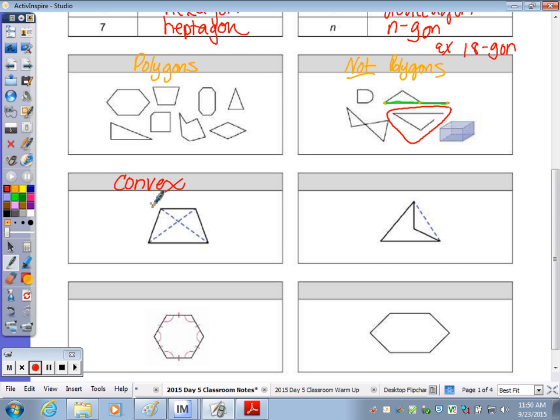Convex meaning every single diagonal, anytime you draw a diagonal, is within the polygon. If you can draw a diagonal outside, it's called concave. It also looks like the figure is caving in right here.